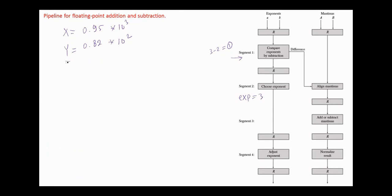And we have to align the mantissa of y by shifting it to the right one position. So now y equals 0.082 multiplied by 10 to the power 3, and the numbers are under the same exponent. In the next segment we can add the mantissas: 0.95 plus 0.82 equals 1.77. And the result is 1.77, and we have a carry 1.